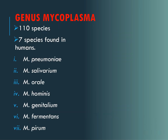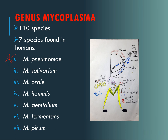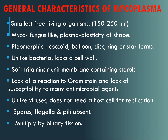The genus Mycoplasma has 110 species. Seven species are found in humans. The most important one is Mycoplasma pneumoniae. At the end of this lecture, I will give you a key — a diagram looking at which you can easily memorize this bacteria. This key is specially prepared for students because they often get confused between different bacteria and are not able to remember the characteristics of each unique bacteria. So watch this lecture till the end.